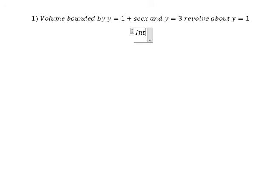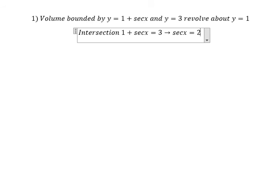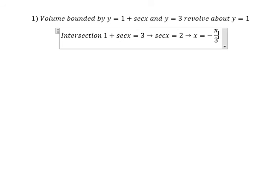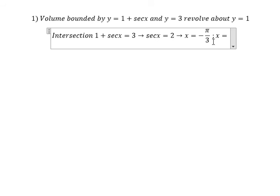We need to find the intersection between this one and this one. So we can find the value of secant of x equal to 2. So we have two solutions of x. That's about x equal to negative π over 3, and x equal to π over 3.